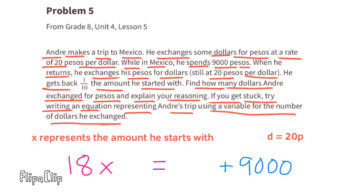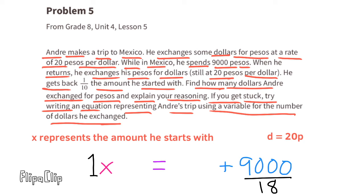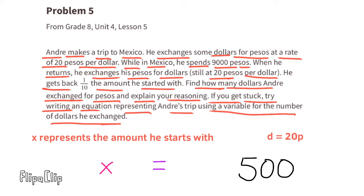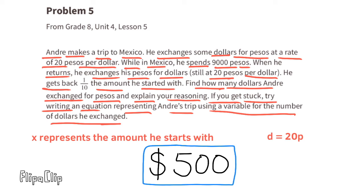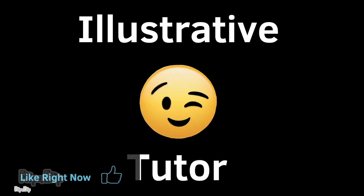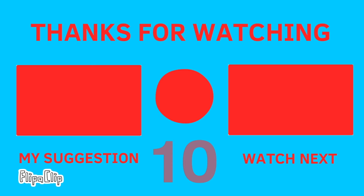Dividing both sides by 18, the left side gives x, and the right side gives 9,000 divided by 18. Since 18 goes into 9,000 five hundred times, x equals 500. That means Andre started his trip to Mexico with 500 dollars. Be sure to support my YouTube channel by liking this video and hitting that thanks button — thanks for watching!